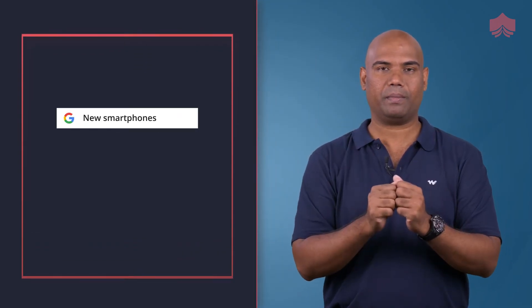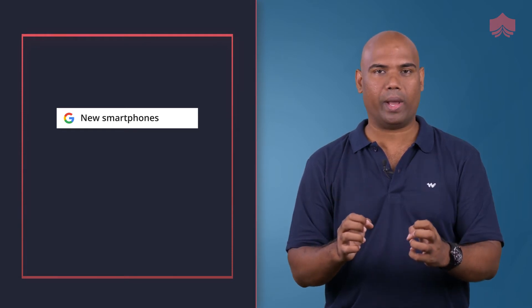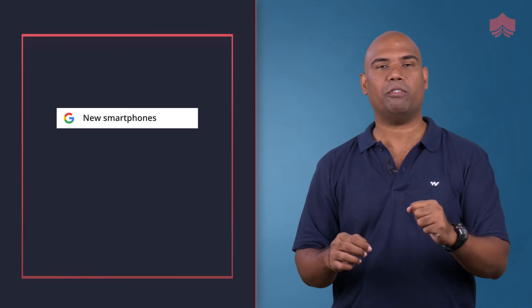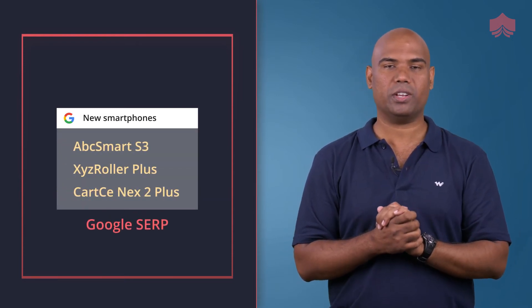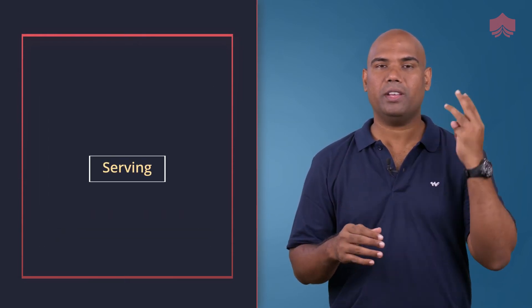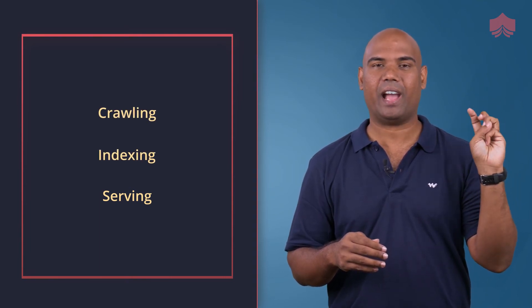That brings us to the third and final step. When you go to Google and search something, what it actually does is respond to your query — going to its index, pulling up the most relevant information, and displaying it to you on the search engine results page. That part is called serving. Three functions: crawl, index, and serve.